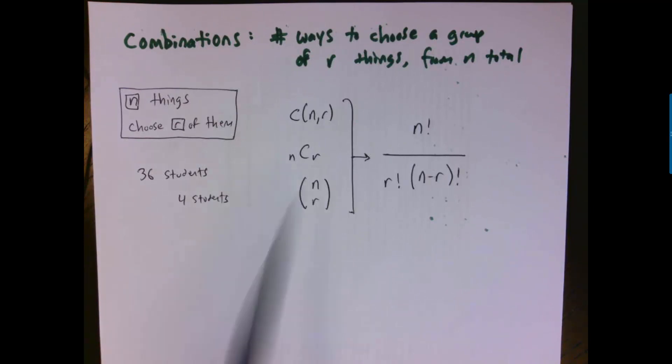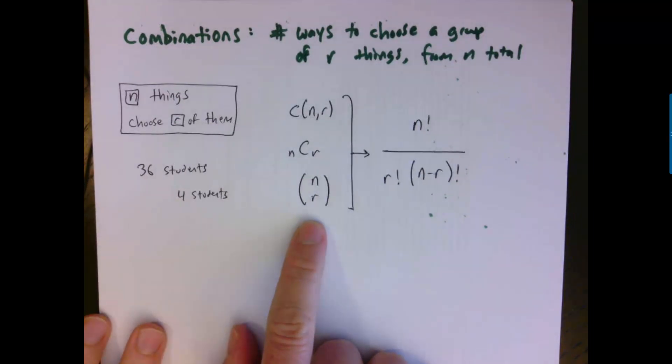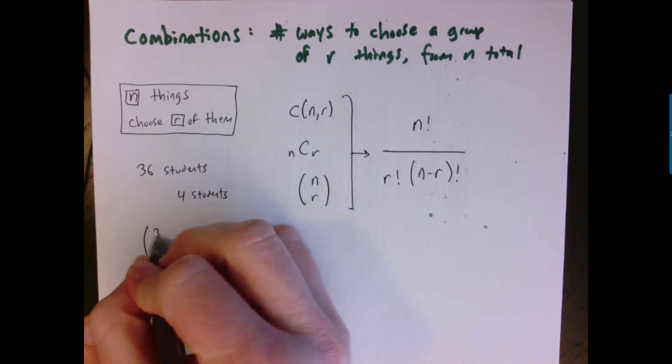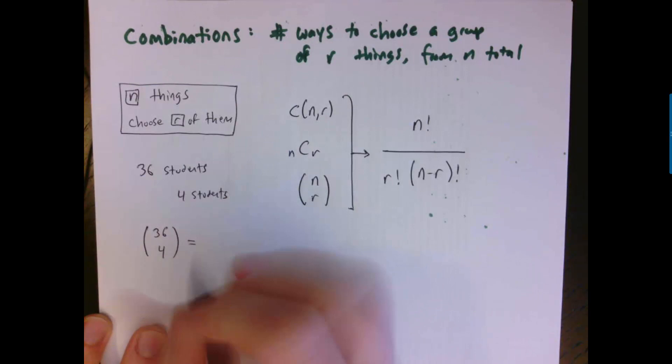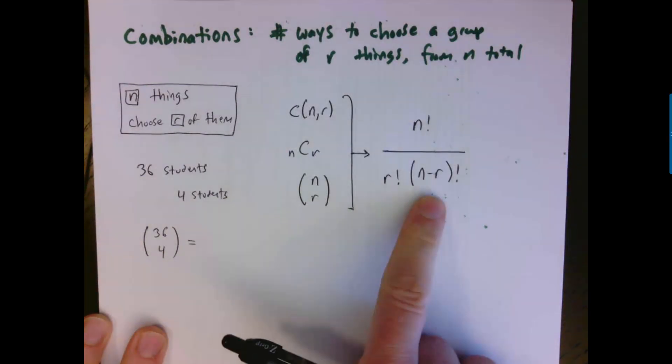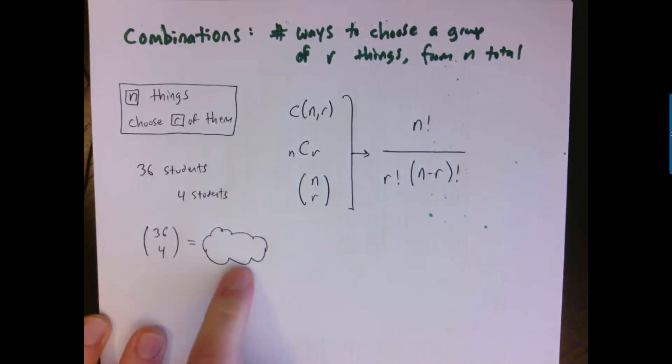Like before, there's an equation for it here. There are three common notations, but this bottom one is by far the most common. The way that you pronounce it is n choose r. For our problem, if I'm choosing a group of four students out of 36, you'd notate it this way and you'd read this 36 choose 4. This is shorthand for this equation, which will tell you a specific number. That number tells you the total number of possible groups of four that I could get if I'm choosing from 36. So what is that number? Let's figure it out.